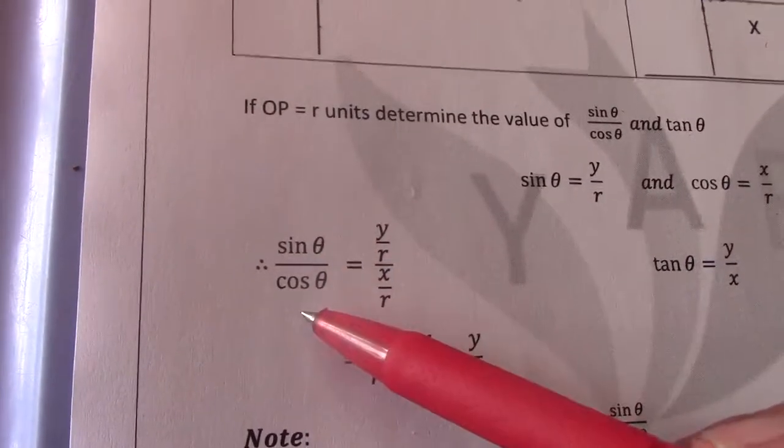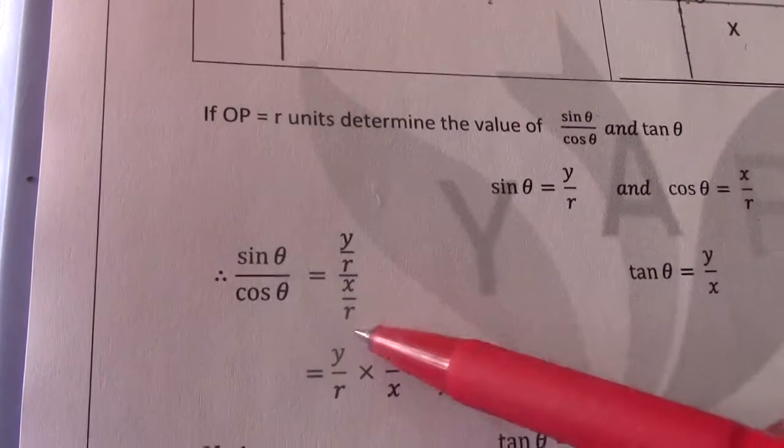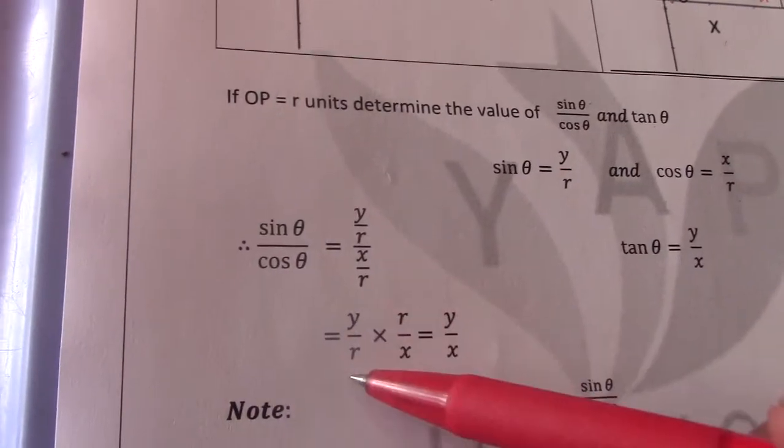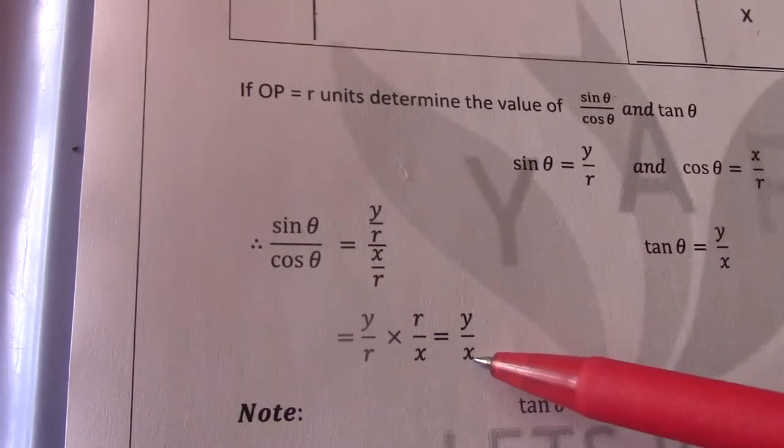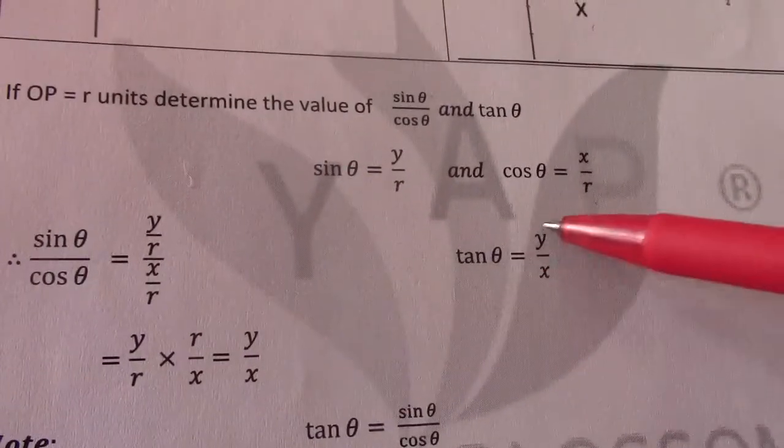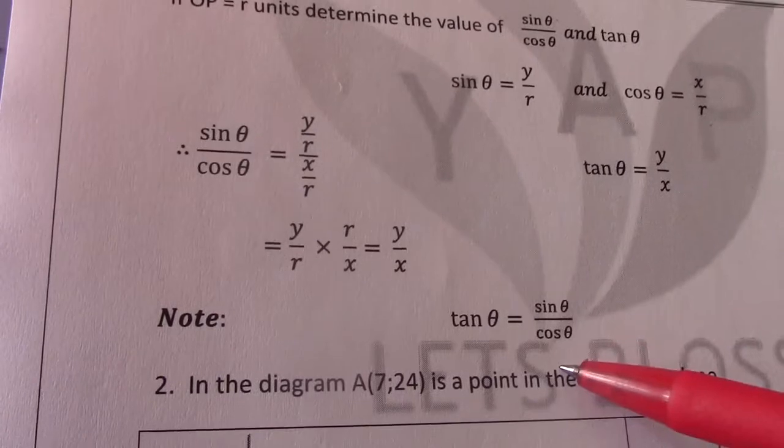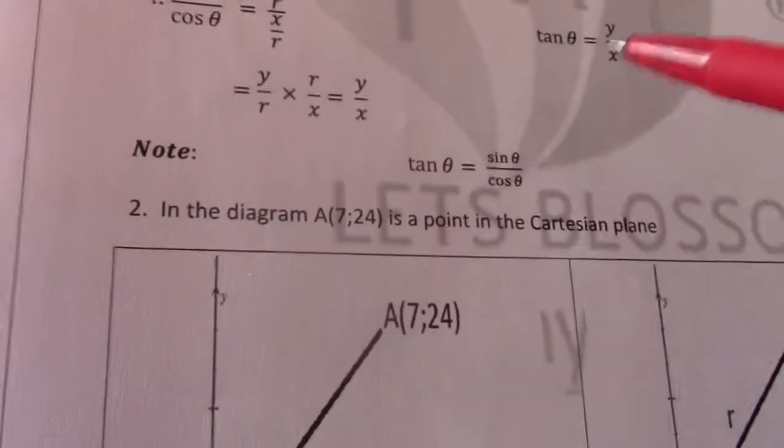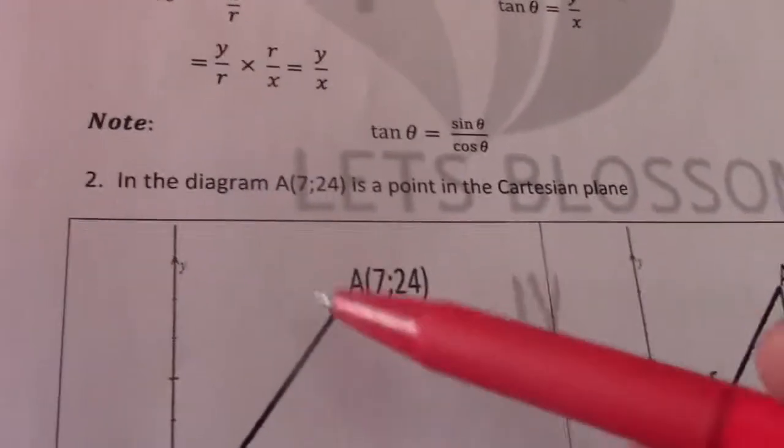So if I say sin theta over cos theta it is Y over R divided by X over R which then becomes Y over R times R over X which then equals Y over X. And the tan theta we should know is Y over X. So as you can see tan theta will always equal sin theta over cos theta. So those are just one of the eight identities we will work with later.